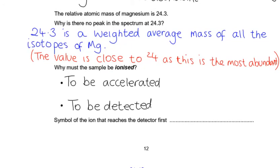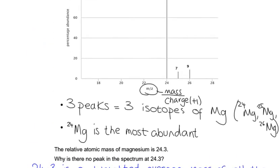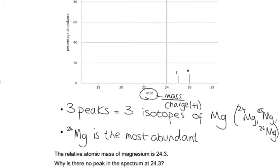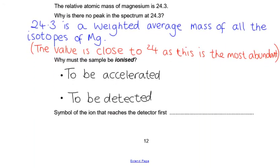And then what else can we tell from this? Looking at it, can you remember which of these ions, the 24, the 25 or the 26, would reach the detector first? Remember, the lighter ions travel the fastest. So the ion that would reach the detector first would be the lightest one, 24, and then it's magnesium.